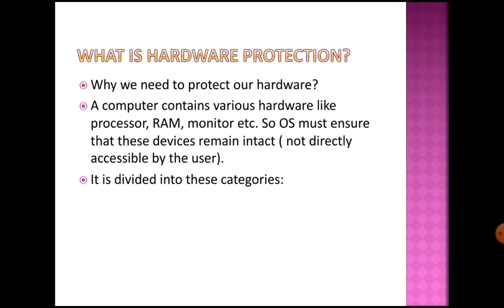A computer contains various hardware like the processor, RAM, and monitor. The operating system must ensure that these devices remain intact and are not directly accessible by the user. We have to protect them from direct user access. The operating system manages this, and hardware protection is divided into specific categories.